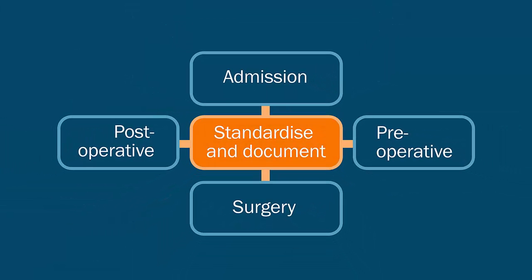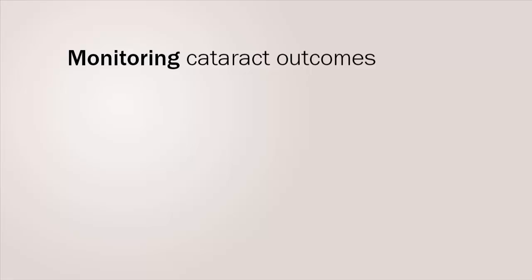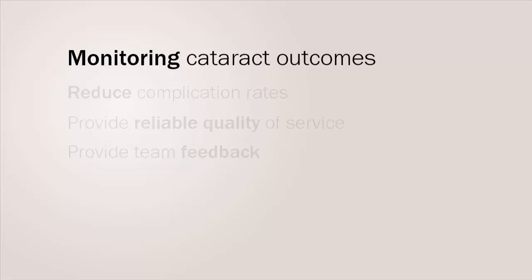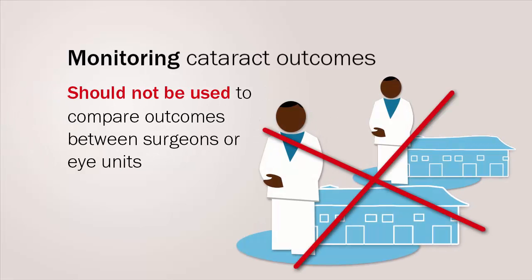Evidence from high volume settings that follow rigid protocols shows that they also achieve high outcomes. Eye units need to monitor their cataract surgical outcomes to reduce overall complication rates and provide a reliable quality of service. It is also important to provide the team with feedback to give insight into achievements and take corrective action when needed. Monitoring should not be used to compare outcomes between surgeons or eye units, as outcome is dependent on many factors besides the skill of a surgeon. It is essential that this is explained to the team before monitoring is implemented.